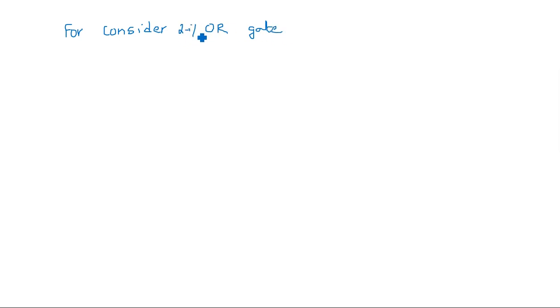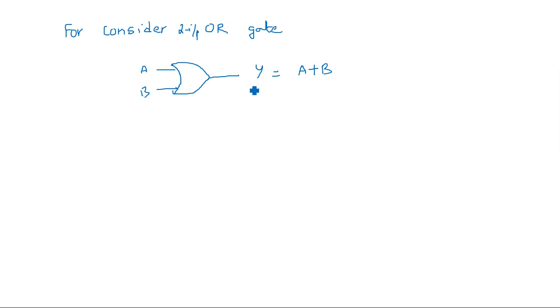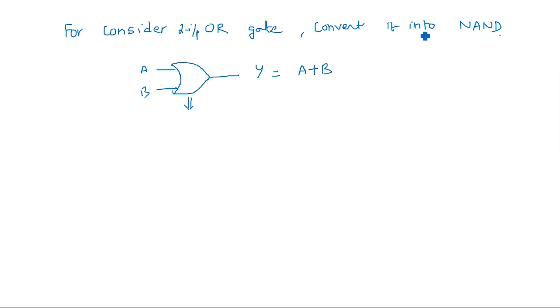Now suppose an OR gate is given to you. Consider a two-input OR gate with inputs A, B and output Y = A + B. You are asked to convert this OR gate into NAND gates without violating its operation — meaning the input should still be A, B and the output should still be A + B.